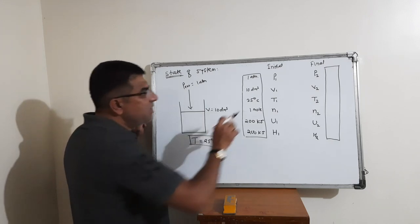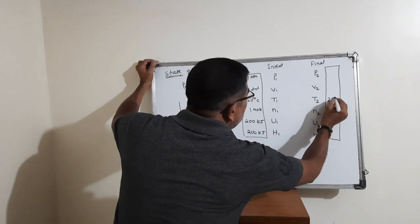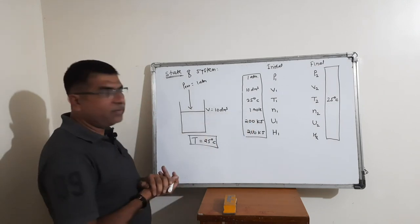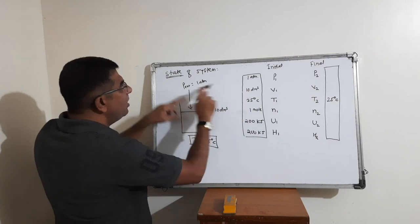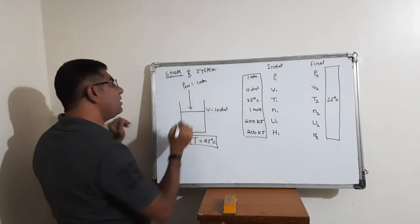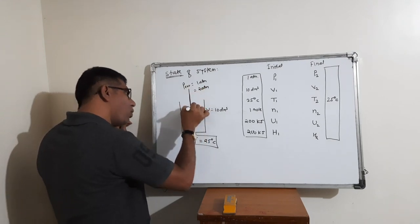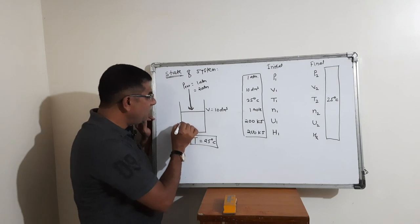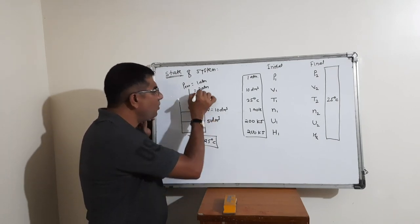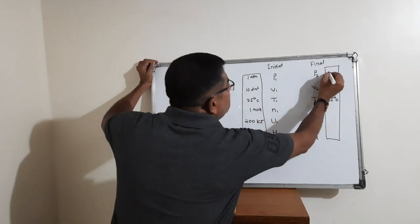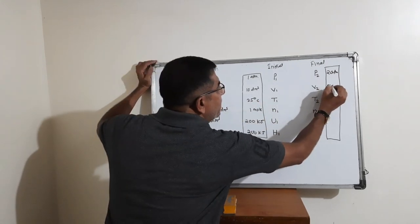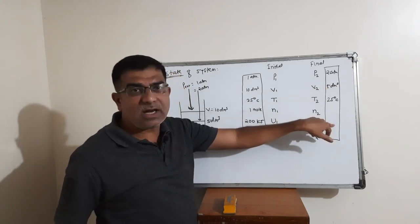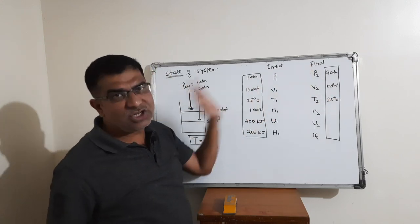With initial volume of 10 dm³ and initial pressure of 1 atmosphere, if we double the pressure to 2 atmospheres, the volume becomes half — that is 5 dm³. So the final state has pressure = 2 atmospheres and volume = 5 dm³. These specific values form the final state of the system. This is the initial state and this is the final state.